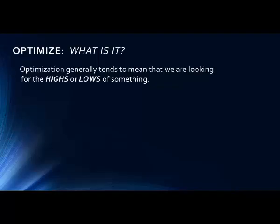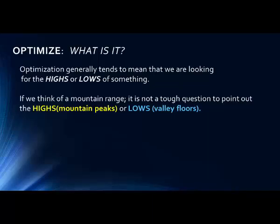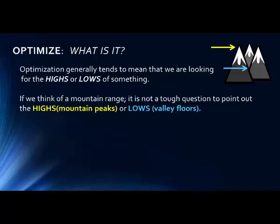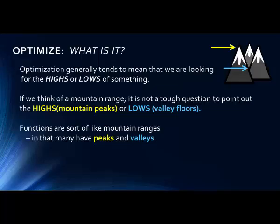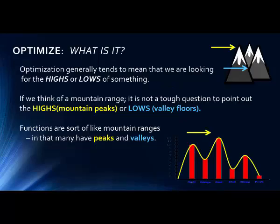Optimization generally means we're looking for the highs or lows of something — the maximum profit or the minimum cost. For a surgical unit, you might look for minimizing the length of stay in a hospital after surgery, or maximizing recovery rates, like range of motion. If you think of a mountain range, it's not tough to point out the highs, which are the mountain peaks, or the lows, which are the valley floors. Functions are sort of like mountain ranges in that many have peaks and valleys.